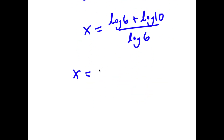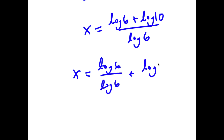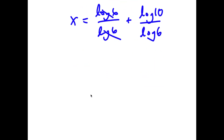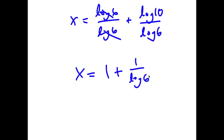So now this is the same thing as log 6 over log 6 plus log 10 over log 6. Log 6 and log 6 cancel out. So now I have x is equal to 1 plus log 10 over log 6, and log 10 is equal to 1. So 1 plus 1 over log 6.